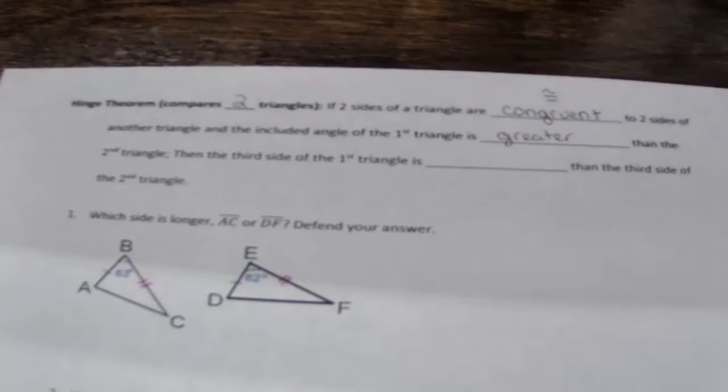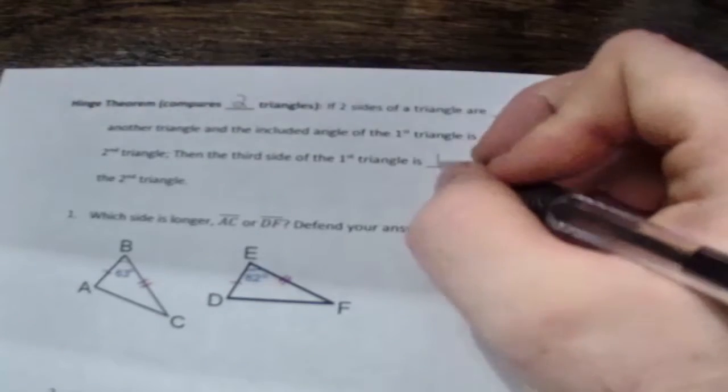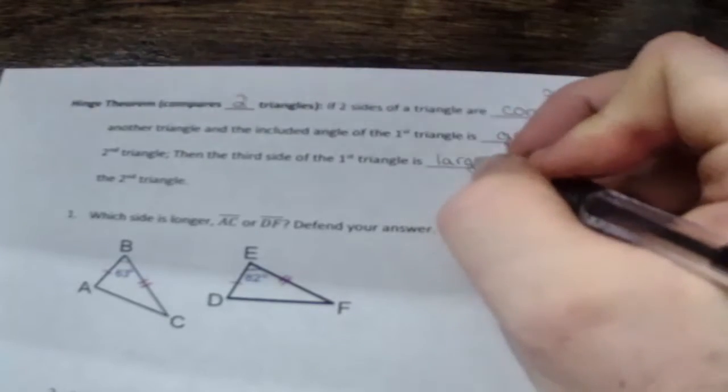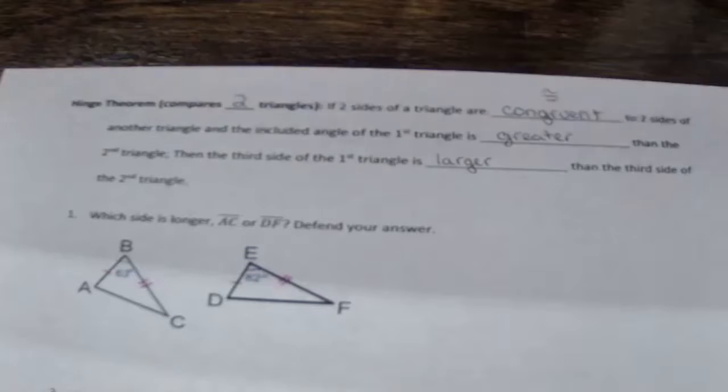then the third side of the first triangle is larger than the third side of the second triangle. Now I think this will make more sense when we look at number one. So the idea is if it has the bigger angle, it's going to have the bigger side.